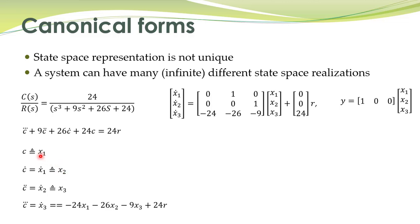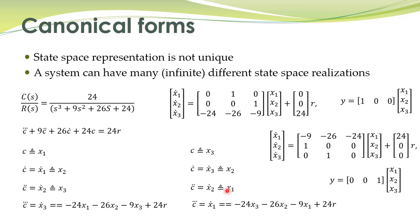For example, if one student defined c to be equal to x1, another student could define c equal to some other variable x3. They might rename c-dot as x2 and c-double-dot as x1, arriving at a different state-space representation for the same system. So for a single system you can have several different state-space representations.